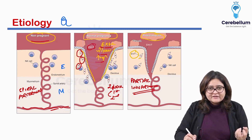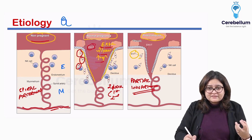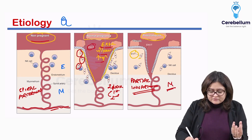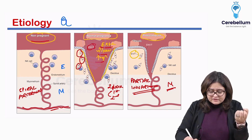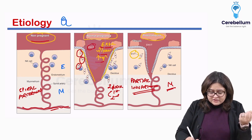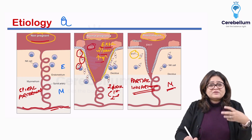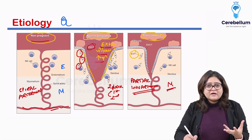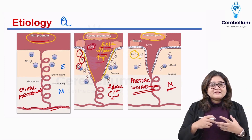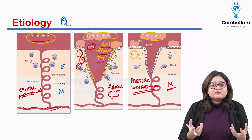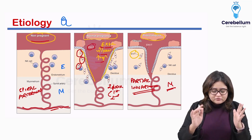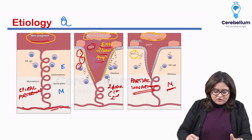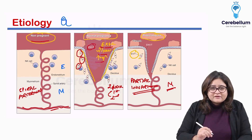Usually the second wave of trophoblastic invasion — the one happening in the second trimester — is what is affected. As a result, the arterioles in the myometrium remain vasoconstricted, and only the endometrium ones are slightly vasodilated. This deficient or partial trophoblastic invasion leads to not enough vasodilatation of the spiral arterioles, less blood supply to the fetus, and this eventually triggers the pathophysiology of preeclampsia.